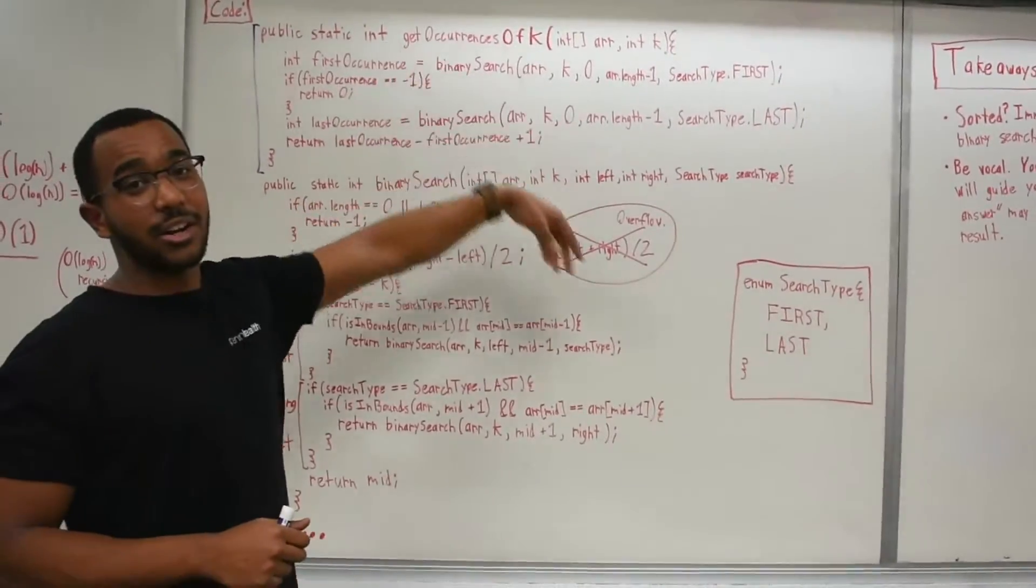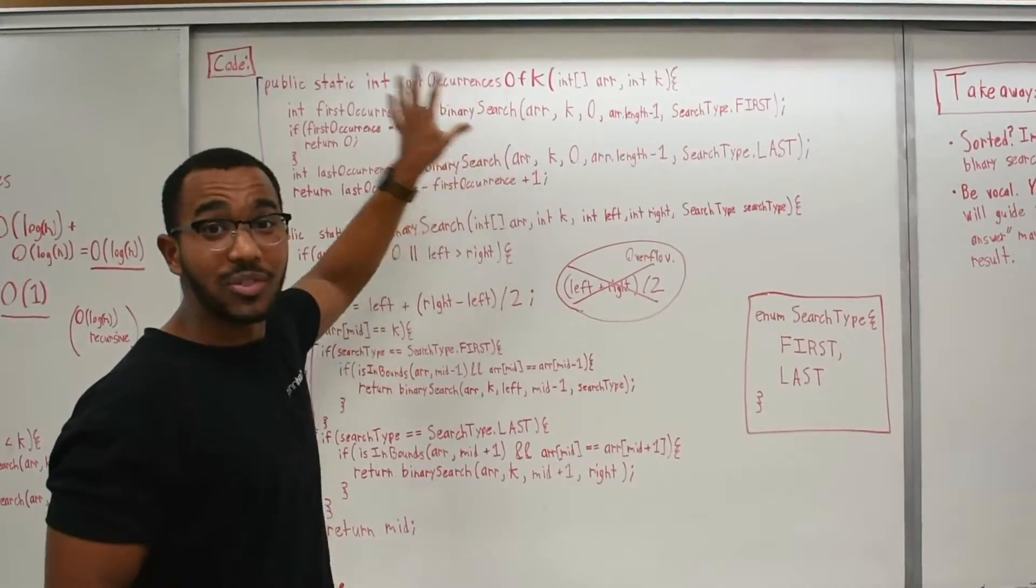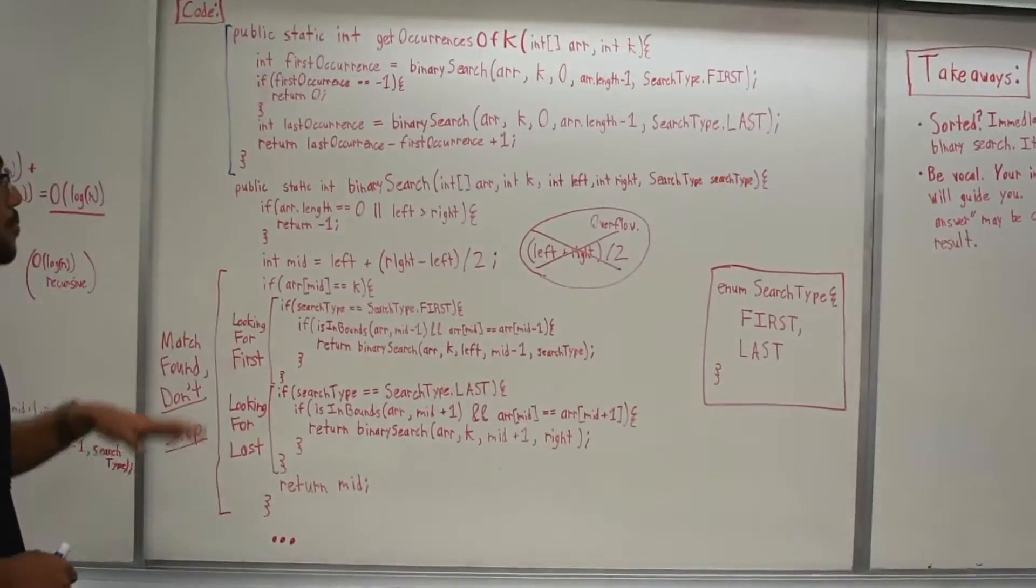And then we find the last occurrence, and then our answer is the last occurrence minus the first occurrence index plus one, like we deduced before in the approaches we just looked at. So that's the overarching algorithm. And as you can see, I abstract the binary search away. I abstract all the other details. This is our high-level algorithm. This is how we're going to answer the problem. And now we can get into the nitty-gritty details of the actual search.